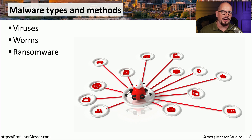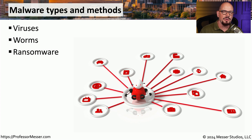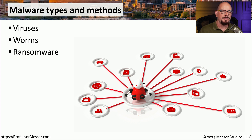Ransomware is a category of malware that gets on a system and begins encrypting all of your personal data. The ransom part of ransomware is that they will give you the decryption key, but you'll have to pay for it. Very often, you're sending cryptocurrency or some other type of currency to the attacker, and they provide you with a key that you can use to unlock your system. You're effectively having to pay the ransom to get your data back.